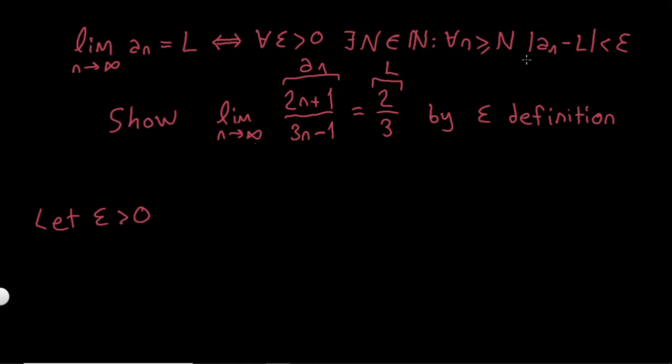And now I will try to look for an N such that this an minus L will be less than epsilon. So I'm writing an minus L, which is (2n+1)/(3n-1) minus 2/3.